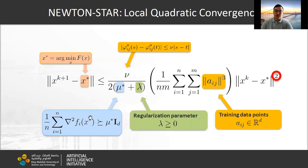Here, we assume that the Hessian at the optimum is lower bounded by μ* times identity matrix, and μ* plus regularization parameter λ is positive.